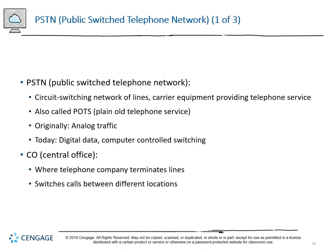PSTN, or Publicly Switched Telephone Network, is a circuit-switched network of lines and carrier equipment that provides telephone service, also called POTS - Plain Old Telephone Service. Originally it only carried analog traffic, but today we also have digital data. Instead of manually controlled switches - people plugging wires into a literal switchboard - that is now done by computers in a much more efficient method.